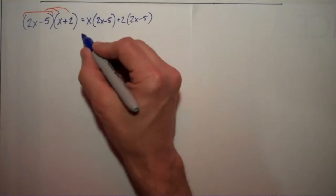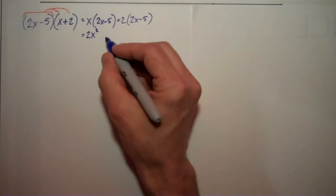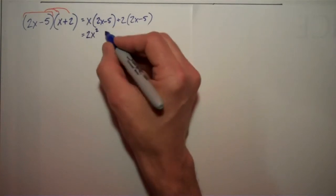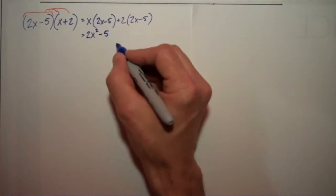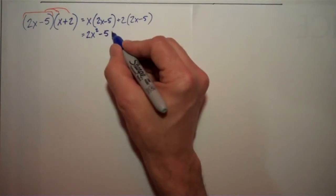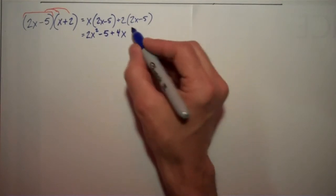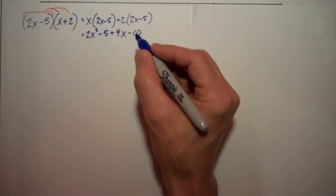And that gets me x times 2x is 2x squared, negative 5 times x is minus 5 plus 2 times 2x. That's going to be plus 4x. And a positive 2 times a negative 5 gets me minus 10.